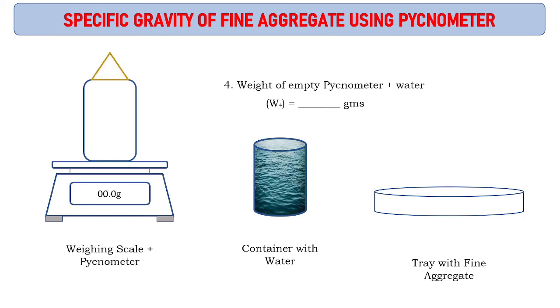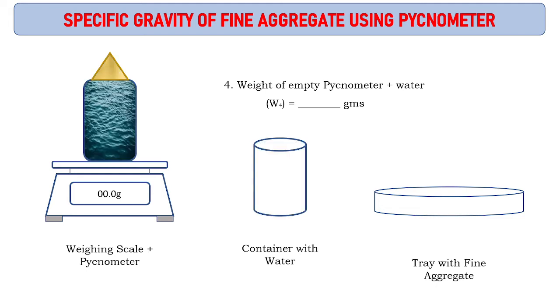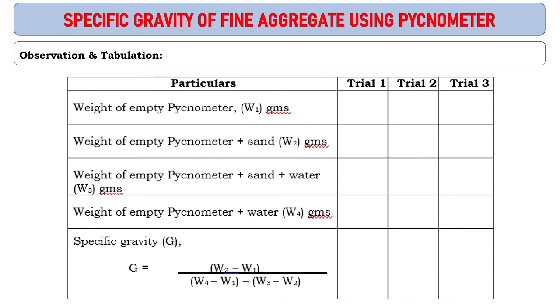We will remove all the material, clean the pycnometer, and only pycnometer plus water will give us the total weight as 1450 grams. Now we have taken the readings: weight of empty pycnometer was 580, pycnometer plus sand 1050, pycnometer plus sand plus water 1760, and pycnometer plus water 1450.